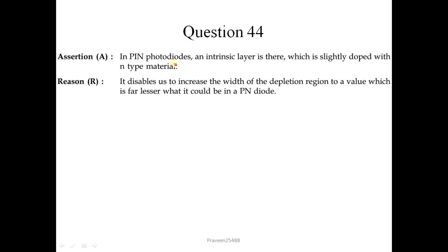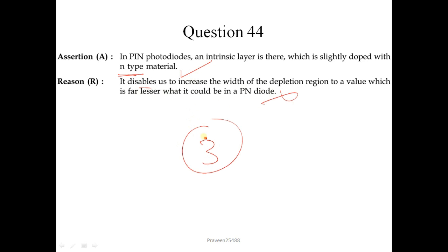Question number 44: In PIN photodiodes, an intrinsic layer is present which is lightly doped, making this assertion correct. However, the reason states that this enables increasing the width of the depletion region to a value far less than what it could be in a PIN diode — this is not correct. The correct option is 3 (A is true but R is false).